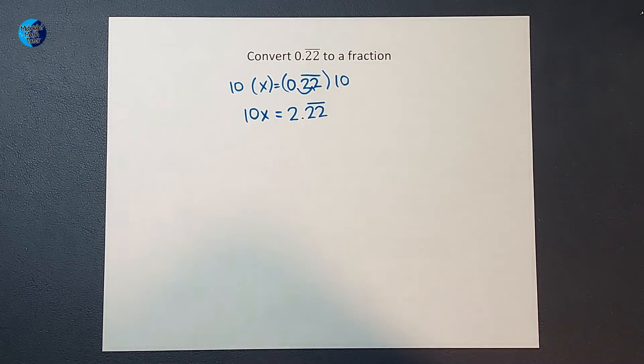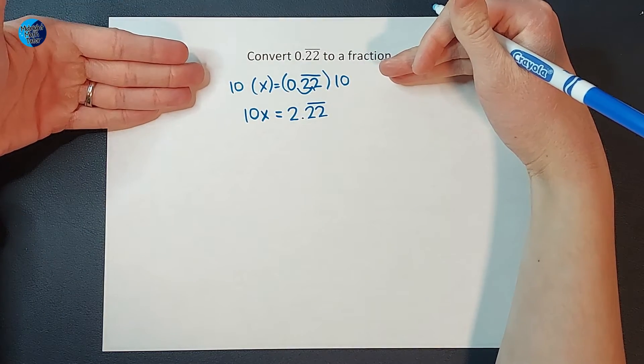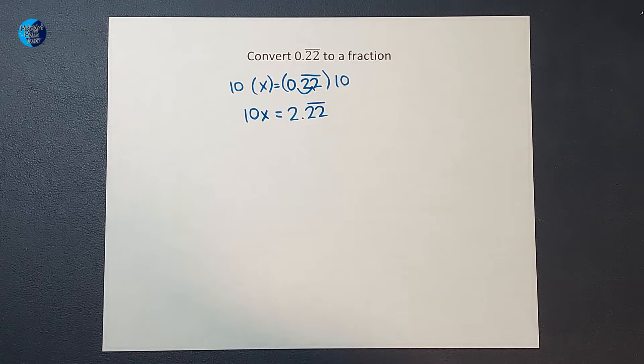So far, everything is totally okay in math land, right? I can multiply both sides by the same thing. My equation is still balanced.